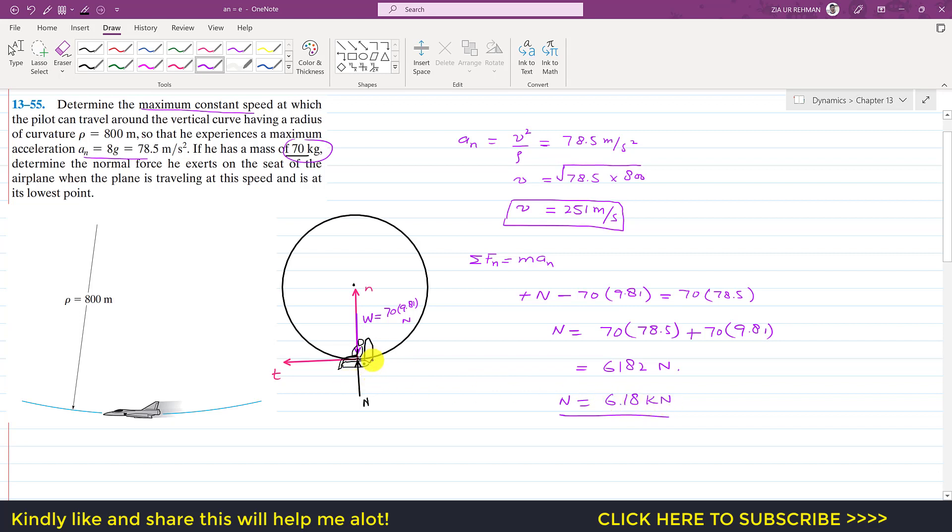So the same, he will apply the same force 6.18 kilonewton force on the seat as well. So these are the action and reaction forces. So this is the solution of this particular problem. I hope you people would have understood the solution of this problem. Kindly subscribe my channel and like this video if you people want me to solve such more problems from engineering statics and dynamics.